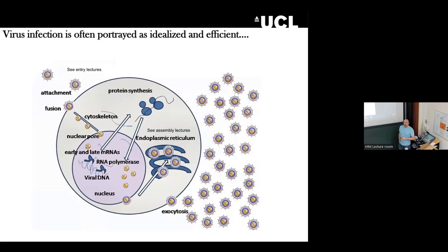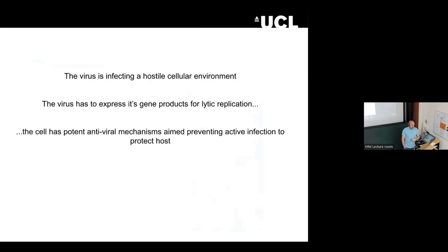When we draw the diagram, we portray this as a very efficient process — the virus will infect the cell, do what it needs to do, and make new viruses. But actually, as I alluded to in the previous talk, a lot of viruses don't make it. They might find a cell, get in the cell, and actually get restricted by the cell. The cell has defence mechanisms to protect itself from these viruses.